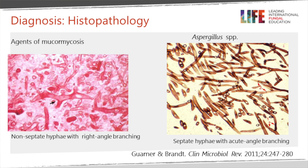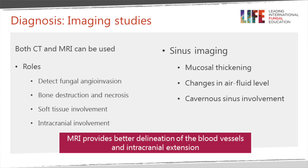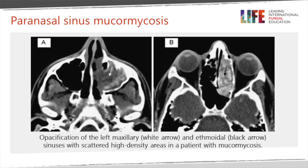On microscopy, mucormycosis shows broad, slightly irregular hyphae without septations and variable diameter, contrasting with aspergillus which has uniform hyphae with 45-degree angle branching. In neutropenic patients, both infections can coexist. For imaging, both CT and MRI are important - CT is better for bone destruction, MRI better for blood vessels and intracranial extension. Imaging is critical for surgical planning and repetitive scanning is needed for surviving patients.